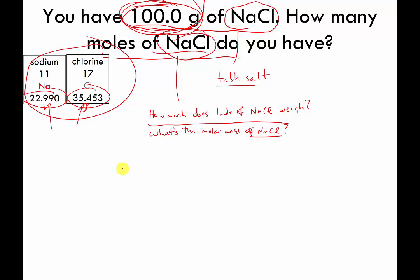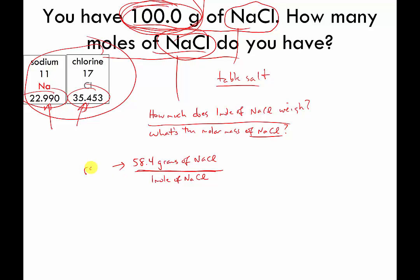To find the molar mass of NaCl, we add up the molar masses of sodium and chlorine together. Adding those numbers up, it comes out to about 58.4 grams — so one mole of NaCl weighs about 58.4 grams. I'm rounding to the tenths place, but rounding to the ones place is perfectly fine too. The molar mass of NaCl is about 58.4 grams per mole, and I'm writing this as a ratio.